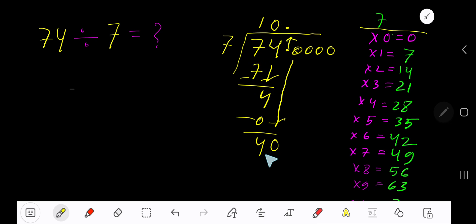7 goes into 40 how many times? 6 times is 42, which is too big, so 5 times. 5 times 7 gives you 35. Subtract to get 5. Bring down another 0. 7 goes into 50 how many times? 8 times is 56, which is too big, so 7 times.